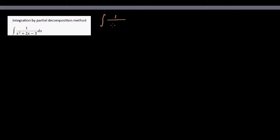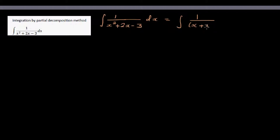In this video I want to integrate using the partial fraction method. We want to integrate the function 1 over x squared plus 2x minus 3 dx. Let's factorize the denominator first into two brackets, so this is equal to the integration of 1 over x plus 3 times x minus 1.